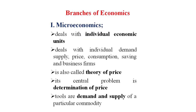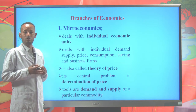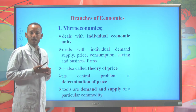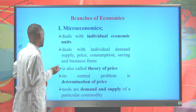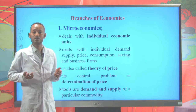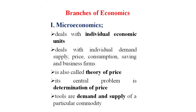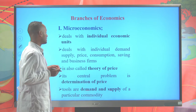Economics is broadly categorized into microeconomics and macroeconomics. Microeconomics deals with individual economic units such as individual demand, individual supply, individual saving, consumption, and individual market prices. It is also called the theory of price. The central problem of microeconomics is the determination of price, and the tools used are individual demand and individual supply. Microeconomics was proposed by Adam Smith, who is generally considered the father of economics.